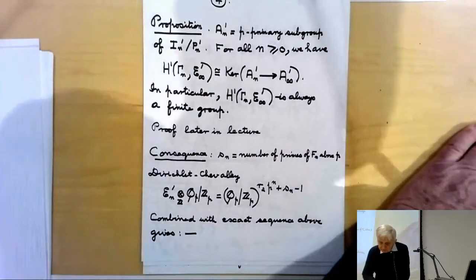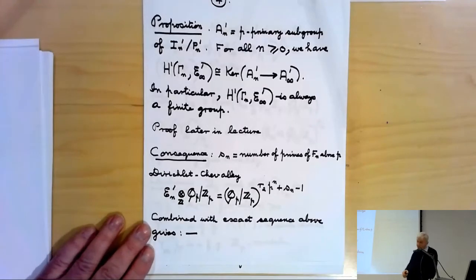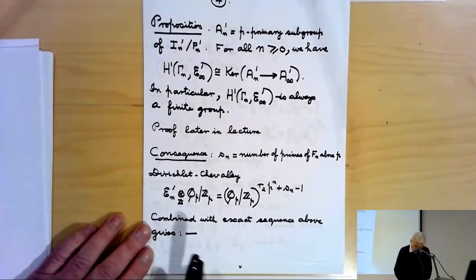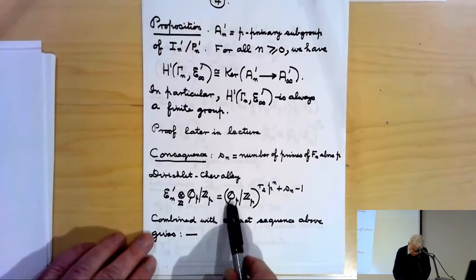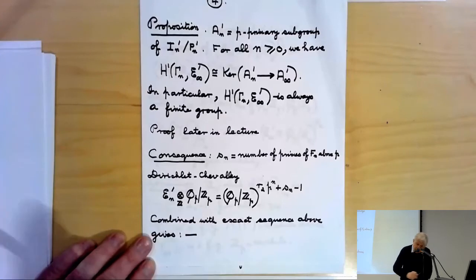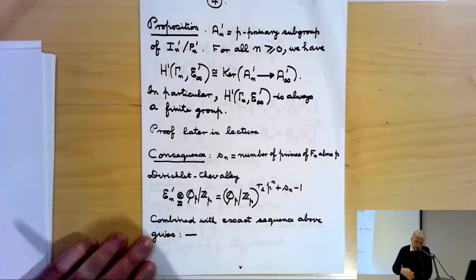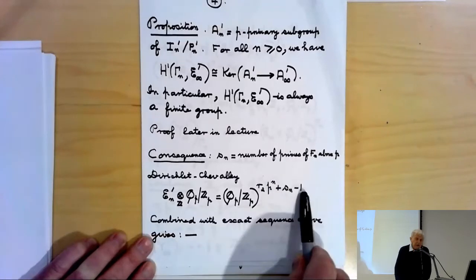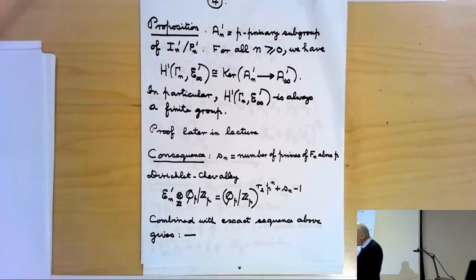Assuming that theorem, let's discuss the consequences of this fundamental exact sequence. Write s_n for the number of primes of F_n above p. By the Dirichlet–Chevalley theorem, E_n' ⊗ (Q_p/Z_p) is a divisible group (Q_p/Z_p)^r, where the rank of E_n' as a Z-module is r_2·p^n plus the number of primes of F_n above p minus one.